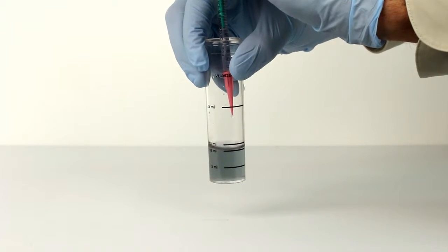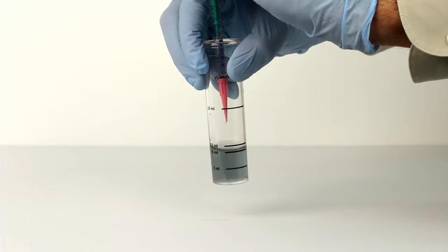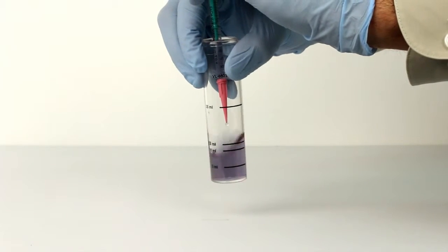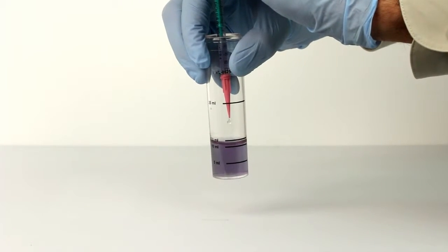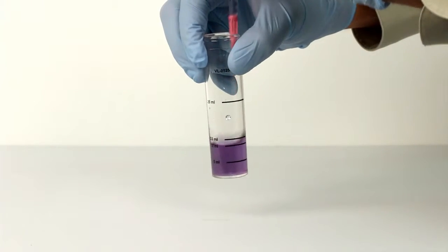Continue adding titrant until the sample color changes from green to purple. A gray intermediate color may develop. Keep titrating to the purple endpoint.